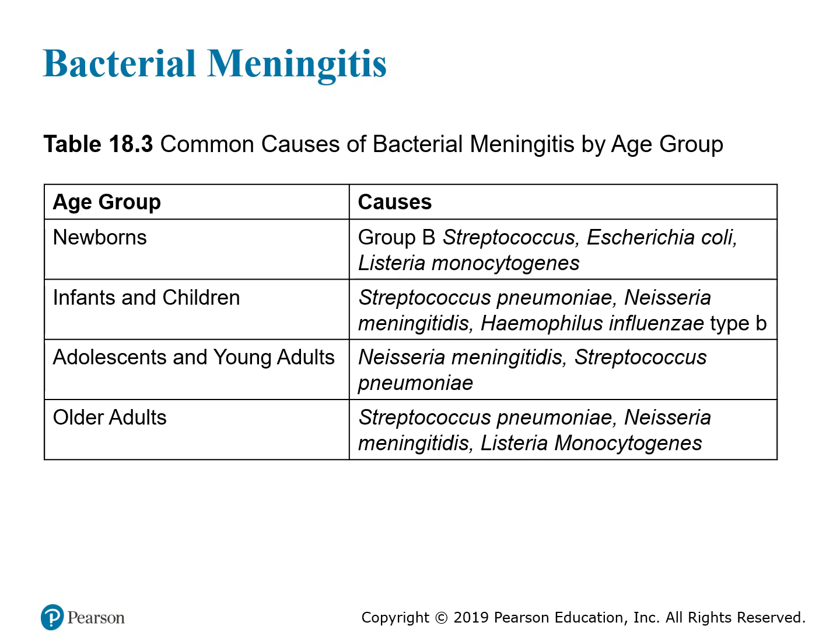In newborns, the most common causative organisms are Group B Strep, E. coli, and Listeria. In infants and children, Strep pneumoniae, Neisseria, and Haemophilus are more common. In adolescents and young adults — such as teenagers and college students — Neisseria meningitidis and Streptococcus pneumoniae are the primary concerns. In older patients, Streptococcus pneumoniae, Neisseria meningitidis, and Listeria are the organisms of concern.